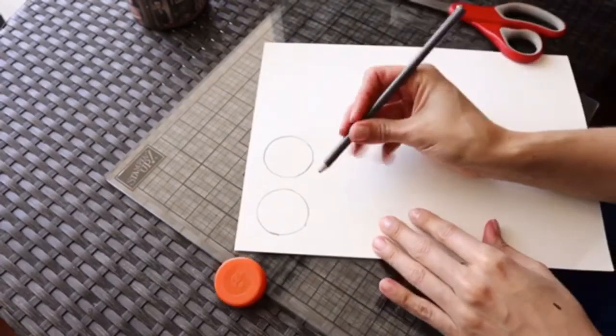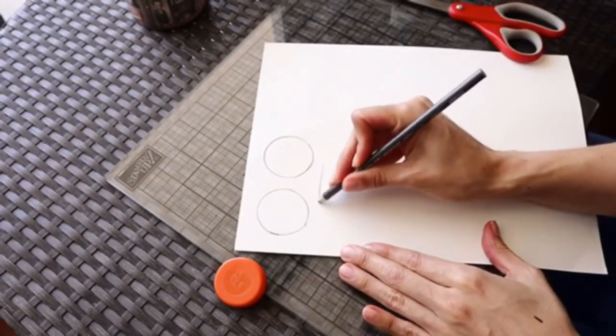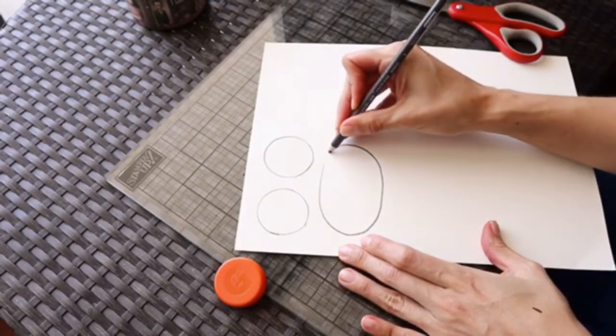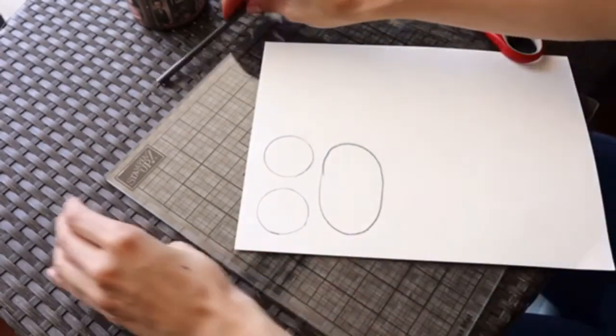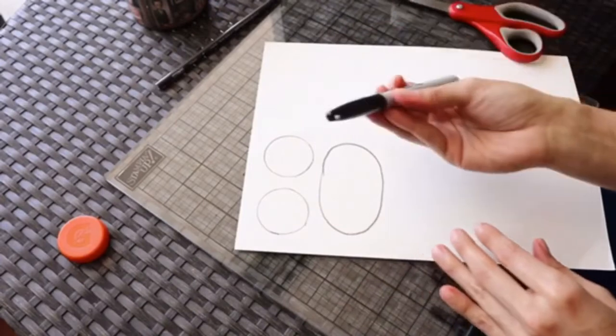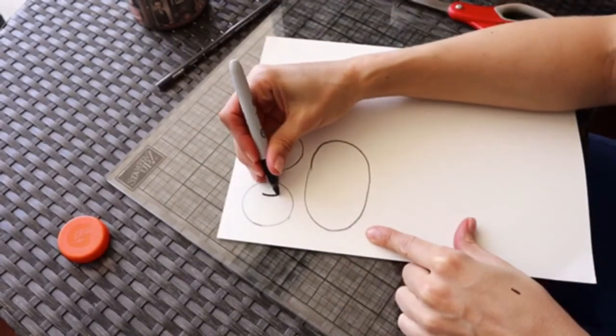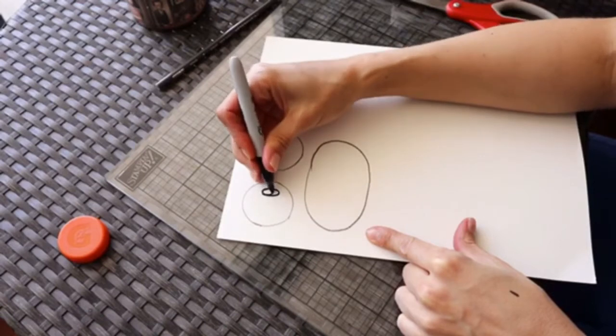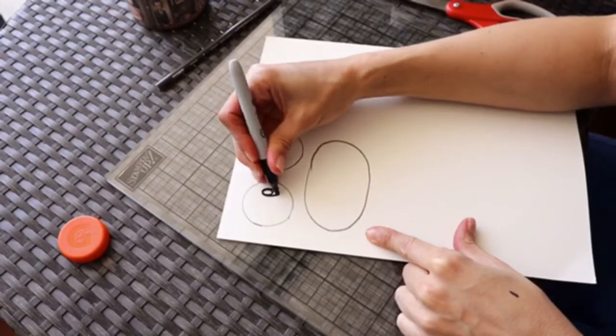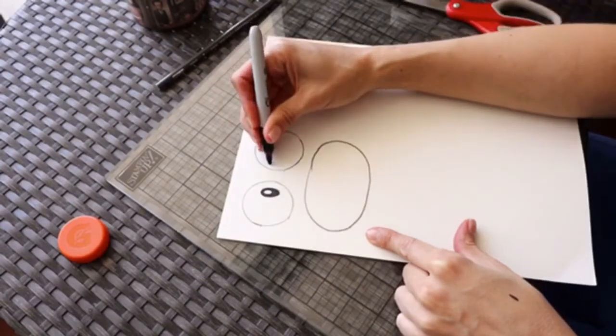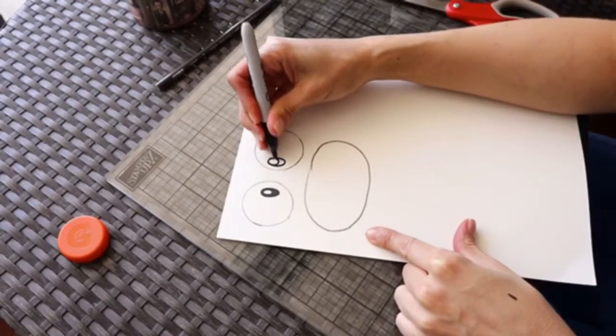And then what I'm going to do is I'm going to make an oval. With my Sharpie, I'm going to design some eyes. So I am going to make an eye over here, and I'm going to leave a white space. It will look like a very glossy eye, and I'm going to make the same thing on the other circle.